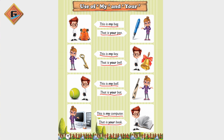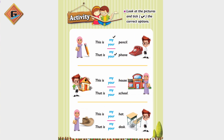Let's revise these sentences once more: 'This is my bag. That is your pen. This is my key. That is your bow. This is my ball. That is your bat. This is my computer. That is your book.' Now let's move to the next page, page 59.